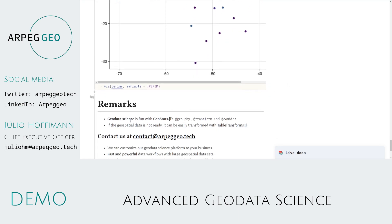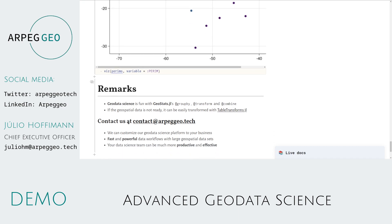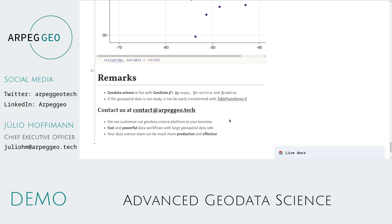It's easy to see that geodata science is fun with GeoStats.jl or our geodata science platform, especially if you start using the group-by, transform, and combine functions. If the geospatial data is not ready for the split-apply-combine pattern, it can be easily transformed with the table-transforms.jl package. Contact us at contact@arpegio.tech for more information. We can customize our geodata science platform to your business — it will be fast and powerful for your large geospatial datasets. Your data science team can be much more productive and effective instead of using traditional data science platforms that do not consider geospatial data.